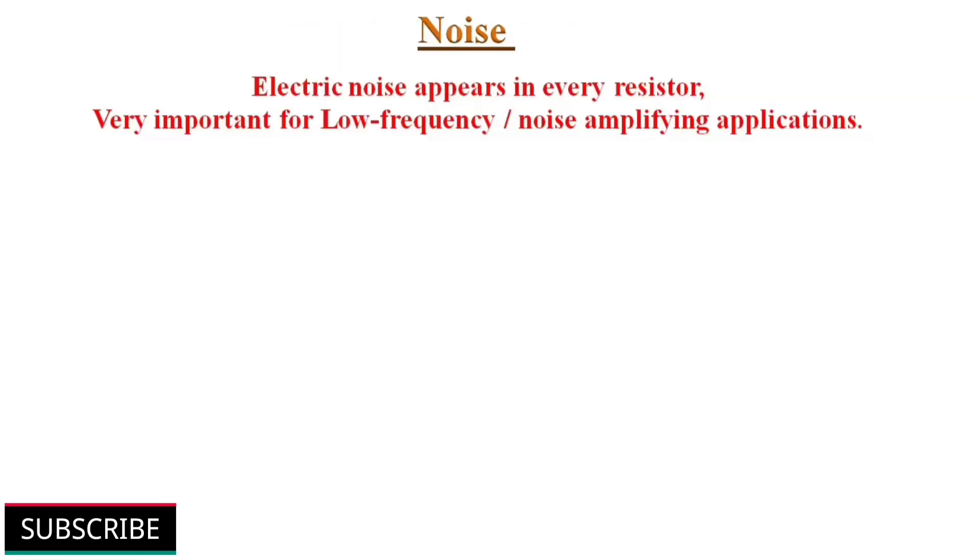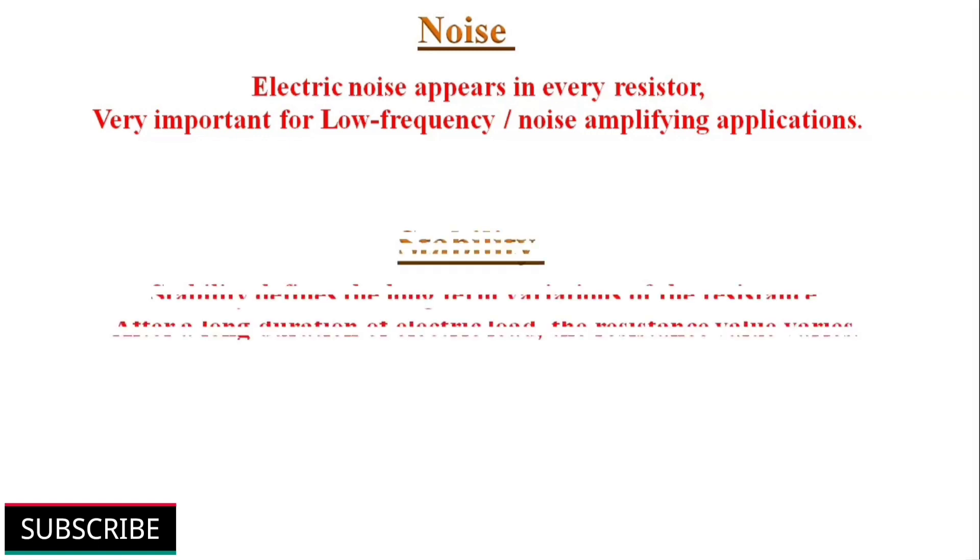Next one, noise. Electrical noise appears in every resistor because of motion of electrons within the resistor, which generates unwanted AC signal which gets superimposed over primary DC signal. So while selecting the resistor for low frequency and low noise application, we must take care of this parameter.